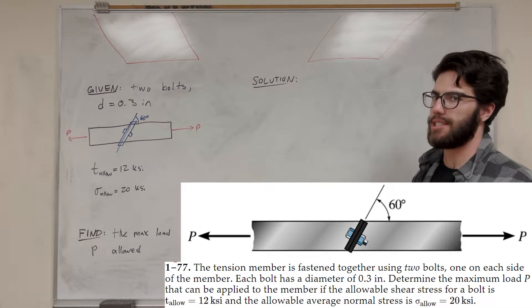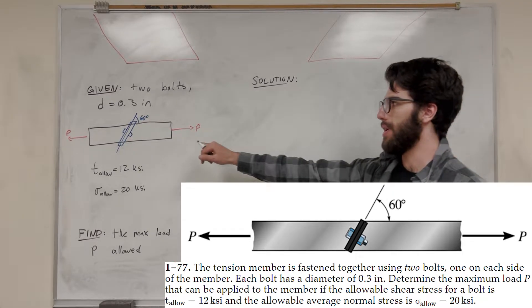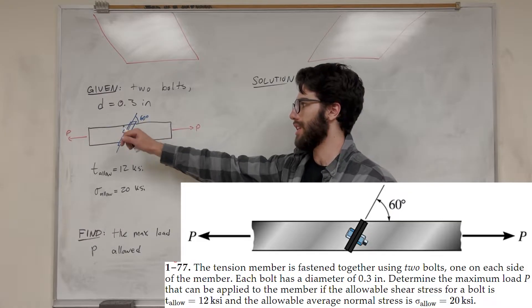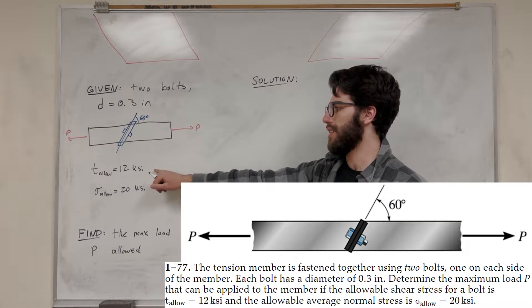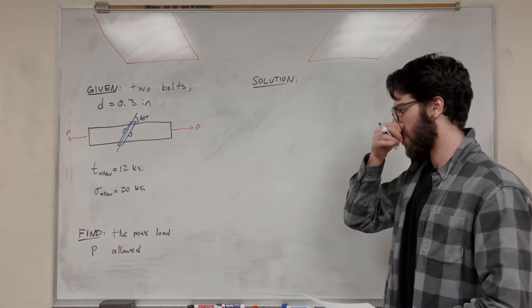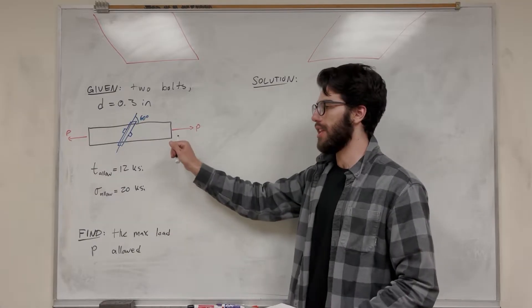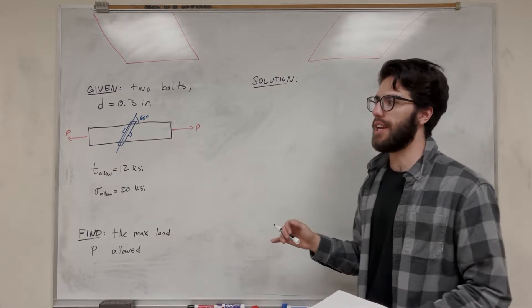What's up Calc gang? Welcome back to some Mechanics of Materials. So we have this beam here and we have two bolts holding them together, where we know our allowable shear stress is 12 ksi and our allowable normal stress is 20 ksi. So our goal is to find the max P force allowed here without the system breaking.